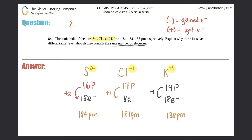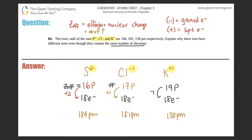Effective nuclear charge is written as Z-eff. It's basically the charge of the nucleus, which comes down to the number of protons — since neutrons have no charge. So the Z-eff for sulfur is +16, for chlorine it's 17, and for potassium it's 19.